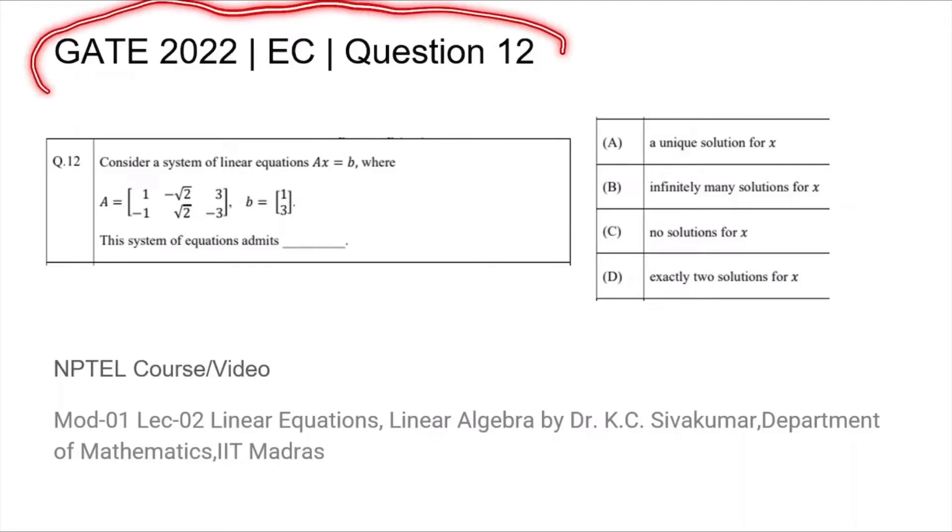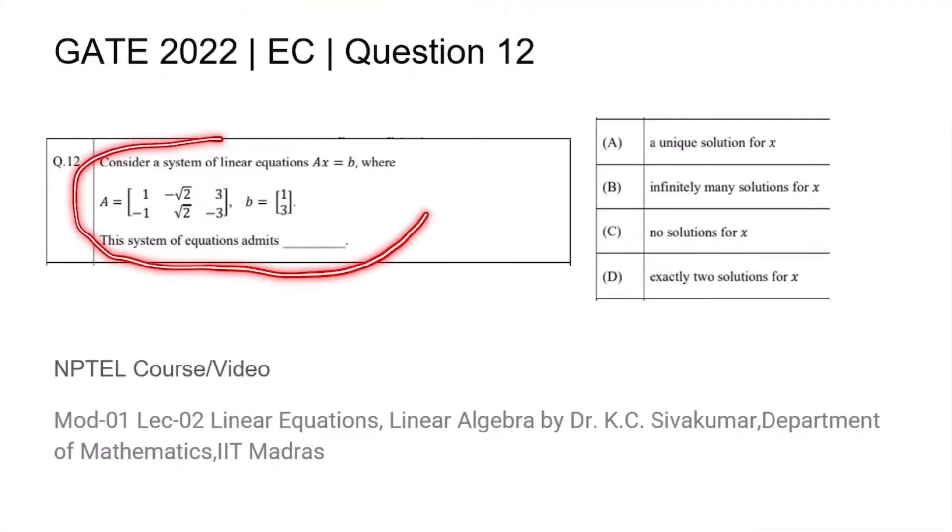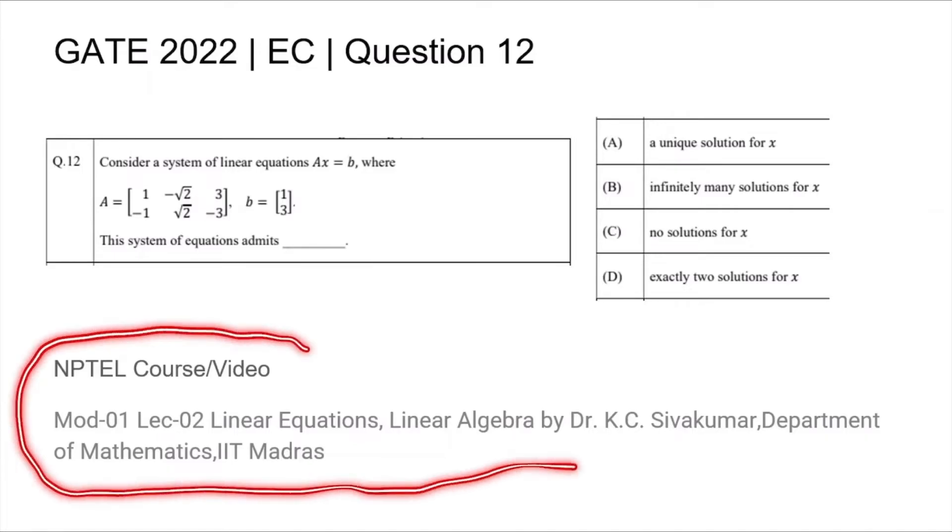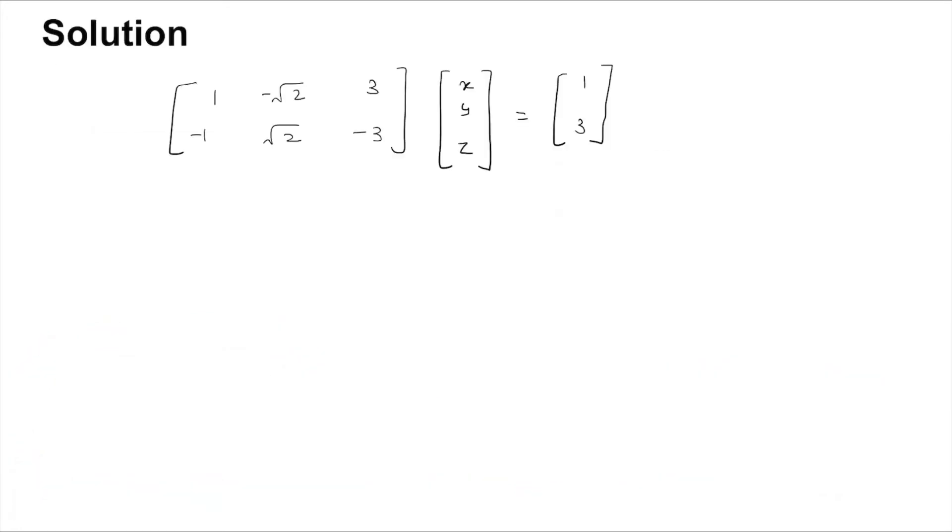This is question number 12 from the GATE 2022 EC paper, where we are given a system of linear equations and are asked to find out how many solutions this system admits. Underneath the question you will find the title of the NPTEL course or video relevant to this topic. Now this is the system AX is equal to B.